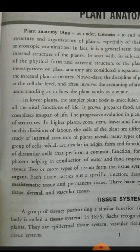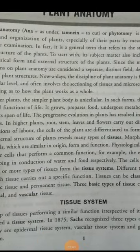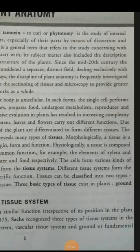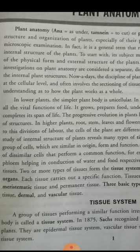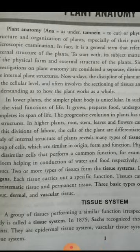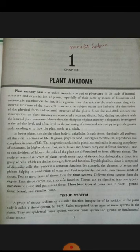A tissue system is a group of tissues performing a similar function, irrespective of its position in the plant. This term 'tissue system' was first recognized by Sachs in 1875, who also provided the three types of tissue systems: epidermal tissue system, vascular tissue system, and ground or fundamental tissue system.